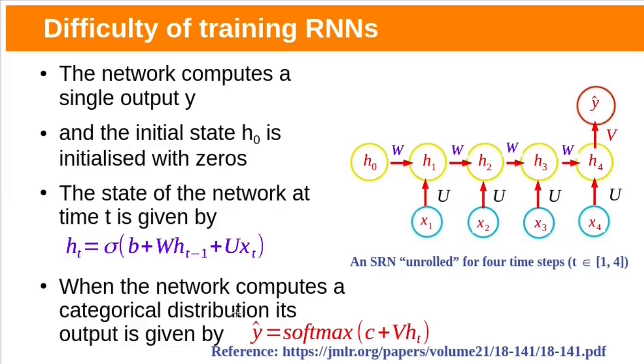For example, RNN compute single output y hat. The state of the network at time step t is given by ht equal to some nonlinear activation function such as sigmoid of utxt plus wht minus 1 plus bias. Here y hat is the softmax of ht times weight matrix v.